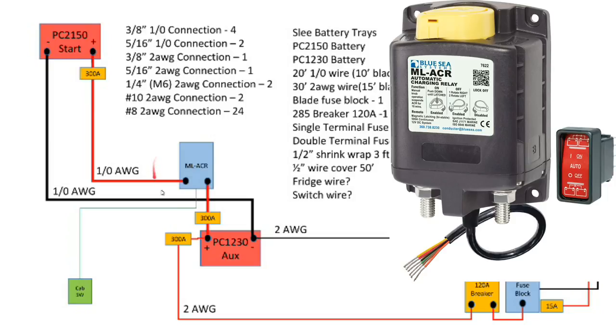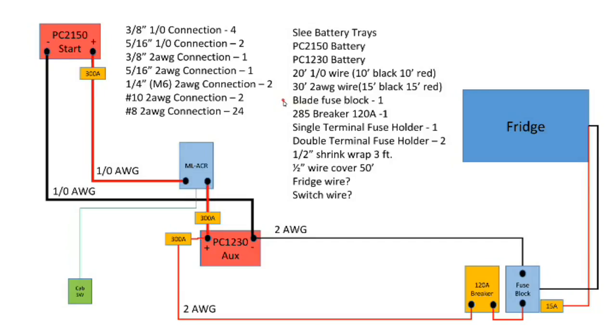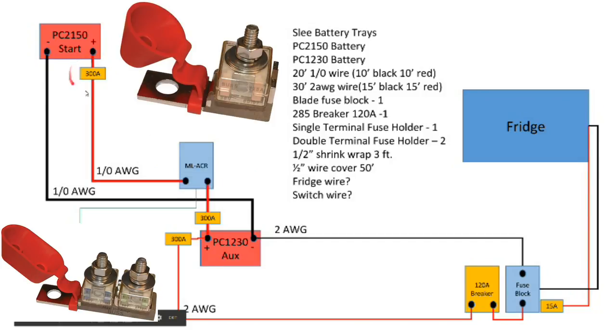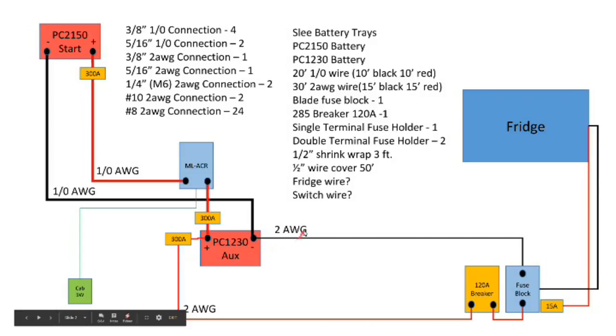Right here you see the MLACR that's hooked up in between the start and the auxiliary. I have a 300 amp fuse, so those are gonna be terminal fuses. Right here we'll have a double fuse holder between one going to the MLACR from the 1230 and one going back to the breaker and fuse block in the rear of the vehicle. We'll have a single fuse holder up here right up by the 2150. These will both have 300 amp fuses. I've decided to switch this one to a 200 amp fuse because I'm basically gonna be fusing to the gauge of the wire.